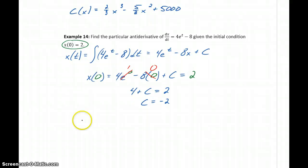So given that initial condition, we can come up with the particular antiderivative, which in this case will be 4e^t minus 8t plus this constant c, so plus negative 2, or minus 2.